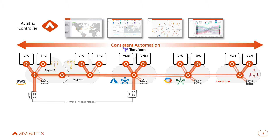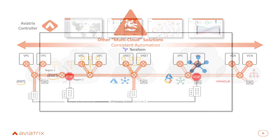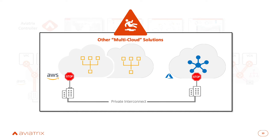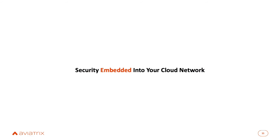You'll hear the word multi-cloud networking a lot in the marketplace today, but be careful — what most people mean when they say multi-cloud is that they connect to multiple clouds but stop at the edge of the cloud and pass you on to the native constructs. So you're not getting the consistent networking, security, visibility, and automation across all of the clouds that I just talked about.